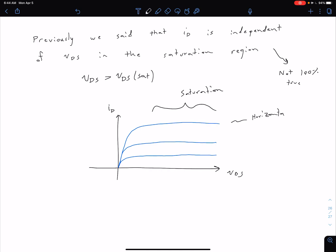It turns out that this is not completely true. What we're going to see is that these curves actually have some non-zero slope. So if we were to draw this more accurately, our curves would look something like this. Of course this is a little exaggerated, but they would have some slope in our saturation region.